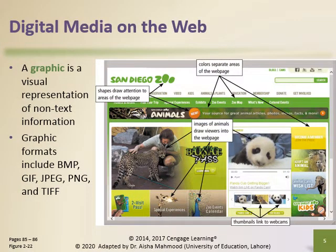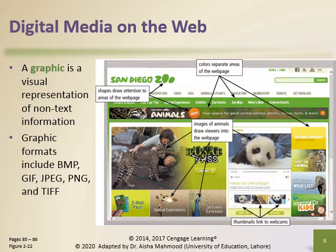A graphic is a visual representation of non-text information such as a drawing, chart or photo. Many web pages use colorful graphics to convey messages. Some websites use thumbnails on their pages because larger pictures or graphics can be time consuming to display. A thumbnail is a small version of a larger image — you can tap or click a thumbnail to display the image in full size.